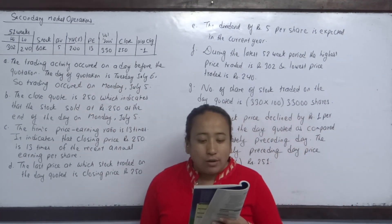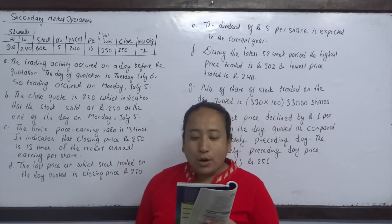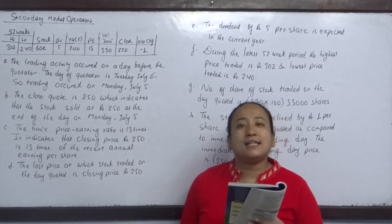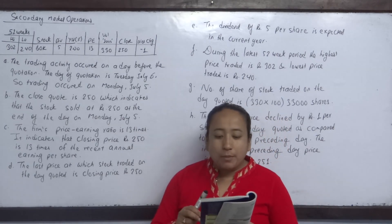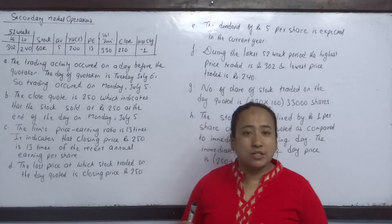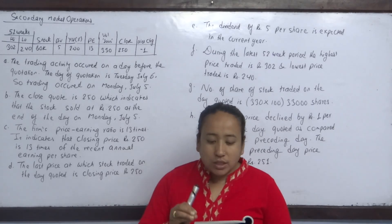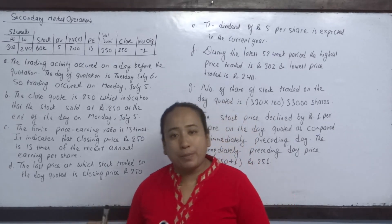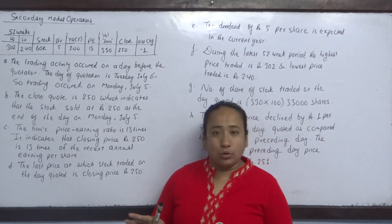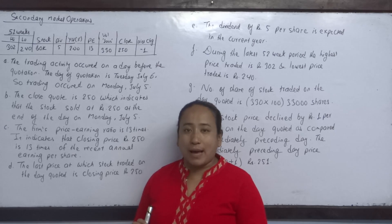The following code for the Bank of Kathmandu stock B.O.K was obtained from the Tuesday July 6 issue of a financial newspaper. This quotation was written in the Tuesday July 6 newspaper. This quotation was recorded for Monday July 5 — one day prior.